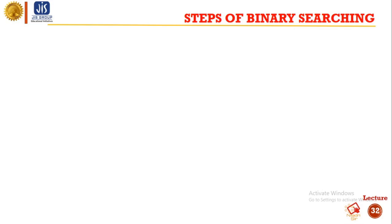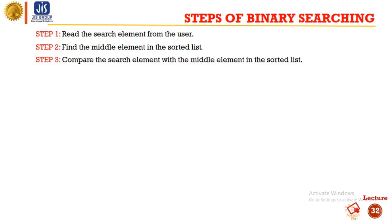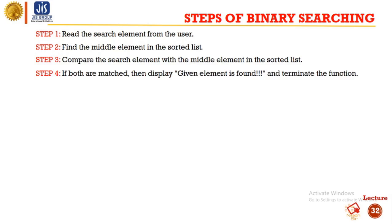We will learn the process of binary search with a pictorial representation. In step one, we will read the search element from the user — the search element will be taken through the keyboard. In step two, we will find the middle element in the sorted list. The formula for the middle element is: low plus high divided by 2. Next, in step three, we will compare the search element with the middle element. If both are matched, we will display 'given element is found' and terminate the function.